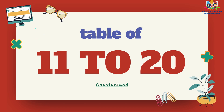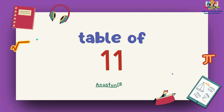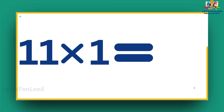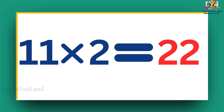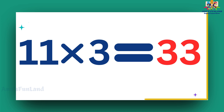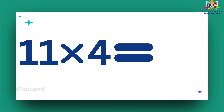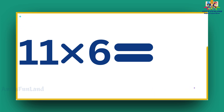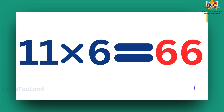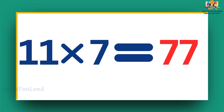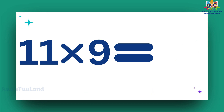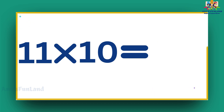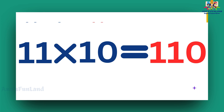Table of 11. Now we will learn the table of 11. 11 ones are 11. 11 twos are 22. 11 threes are 33. 11 fours are 44. 11 fives are 55. 11 sixes are 66. 11 sevens are 77. 11 eights are 88. 11 nines are 99. 11 tens are 110.